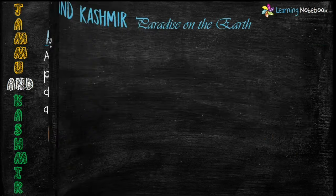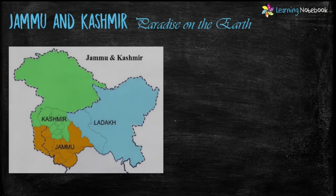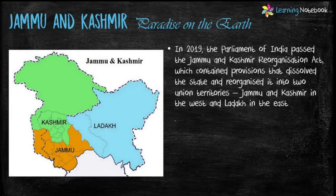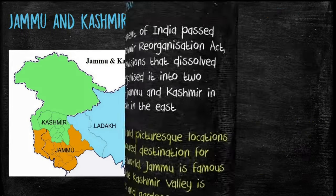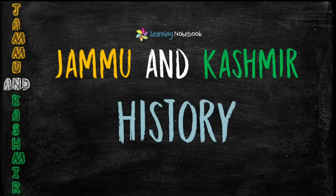Jammu and Kashmir, also known as paradise on the earth, is a union territory of India. Jammu is famous for its temples while Kashmir valley is known for its beautiful lakes and gardens. Now let's learn about the history of Jammu and Kashmir.